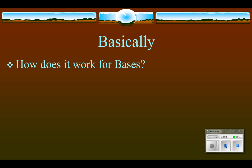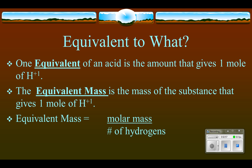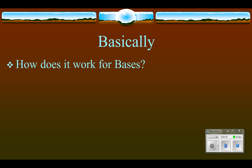How does it work for bases? It works exactly the same. Bases have hydroxides instead of hydrogen ions. The equivalent of a base is the amount that gives one mole of hydroxides, and the equivalent mass is the mass that gives one mole of hydroxides. The equivalent mass equals the molar mass divided by the number of hydroxides — it works the same for bases as for acids.